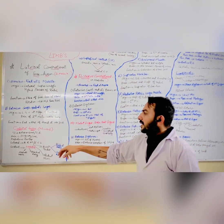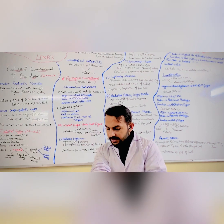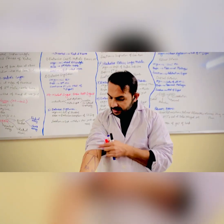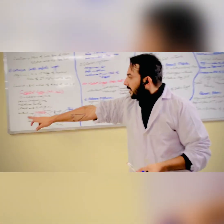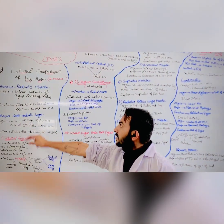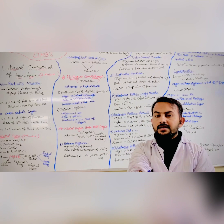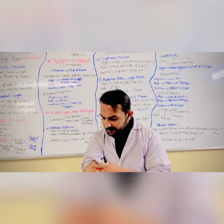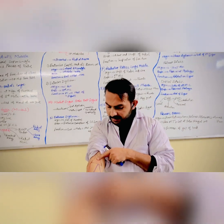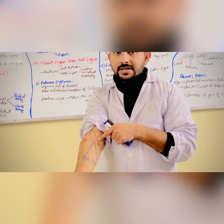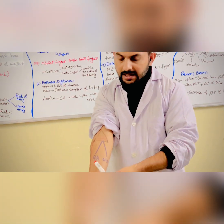Next is the cubital fossa, which extends from the medial line to the lateral line. The medial line is the pronator teres and the lateral line is formed by the brachioradialis and extensor carpi radialis longus together. Within the cubital fossa, the contents are arranged as MBBR: medial nerve, brachial artery, biceps tendon, and radial nerve. The brachial artery divides into two branches: the radial artery and the ulnar artery.